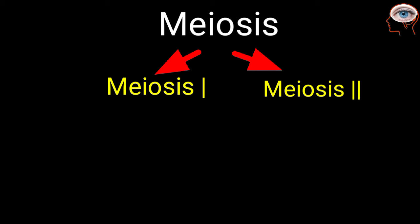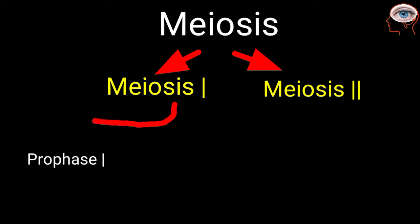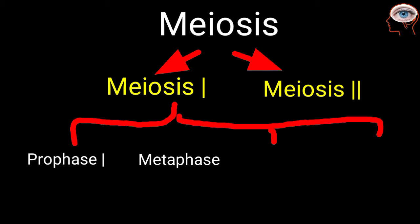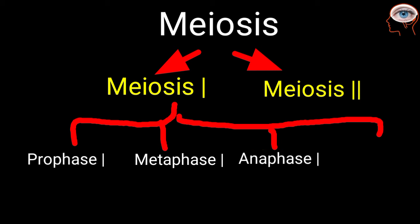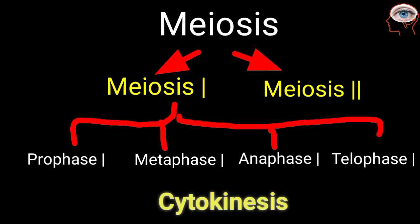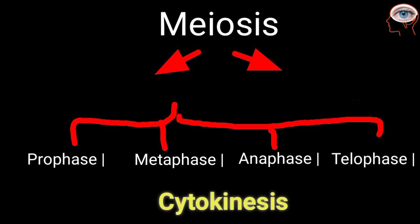Meiosis 1 is subdivided into prophase 1, metaphase 1, anaphase 1, and telophase 1, and then goes to cytokinesis.